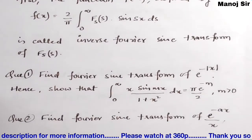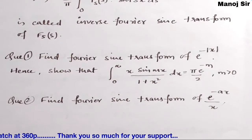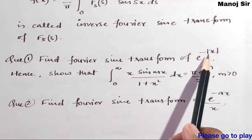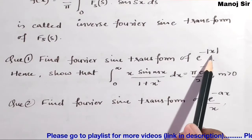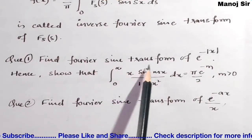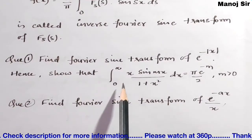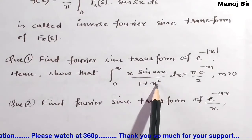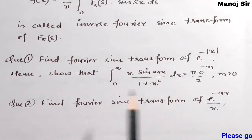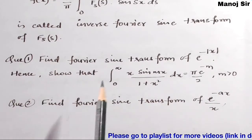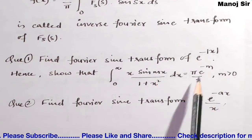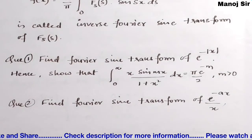In this topic we are going to solve two important problems. The first problem is: find the Fourier sine transform of e to the power minus |x|, and then prove that integration from zero to infinity of x·sin(mx) upon (1 + x²) dx equals pi·e to the power minus m upon 2, where m is greater than zero. The second problem is: find the Fourier sine transform of e to the power minus ax upon x.